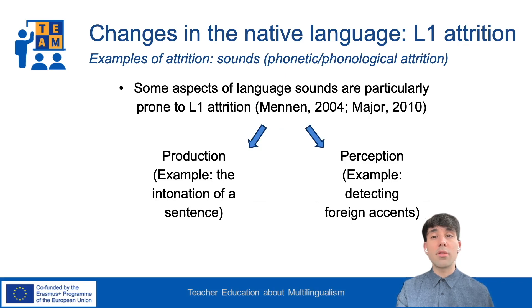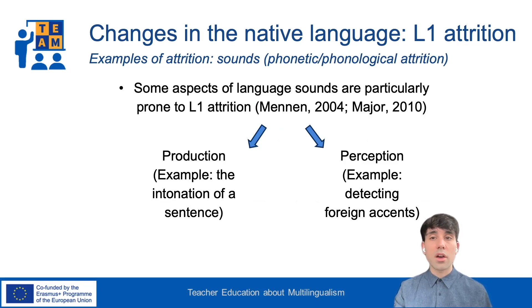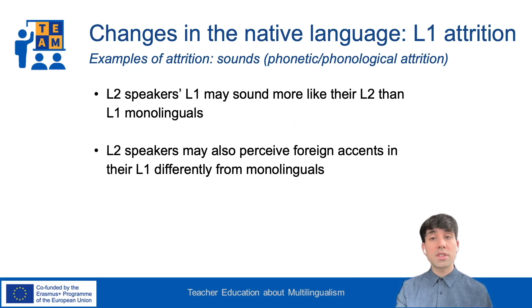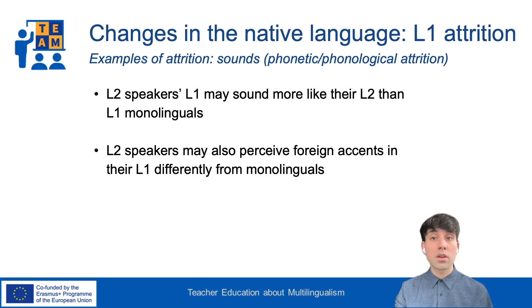Lastly, changes at the level of sounds — that is, phonetic and phonological attrition — are also reported in the first language, though research in this area is relatively limited. Some aspects of language sounds are particularly prone to L1 attrition, for instance the production of sounds such as in the intonation of a sentence, and the perception of sounds, for example when picking up on foreign accents. Certain aspects of the first language of second language speakers, such as intonation, may begin to resemble their second language, leading to differences in how the language is spoken compared to monolinguals.